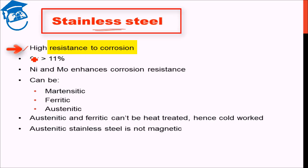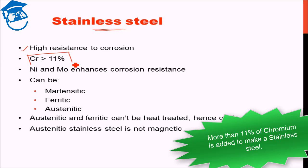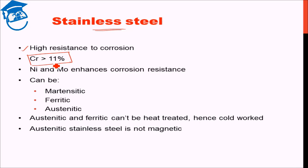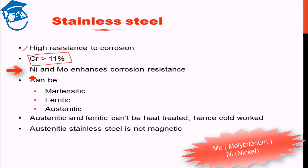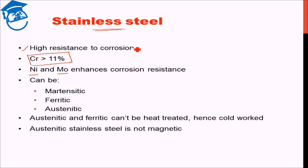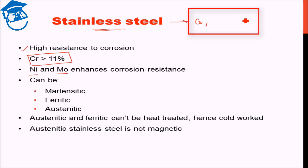What elements need to be added to get stainless steel? Stainless steel mainly requires chromium — chromium must be more than 11% to generate stainless steel. In addition to chromium, nickel and molybdenum are also added in many cases, and their addition enhances corrosion resistance further. So the main alloying element is chromium, which is compulsory, while nickel and molybdenum are not compulsory but add to the corrosion resistance.